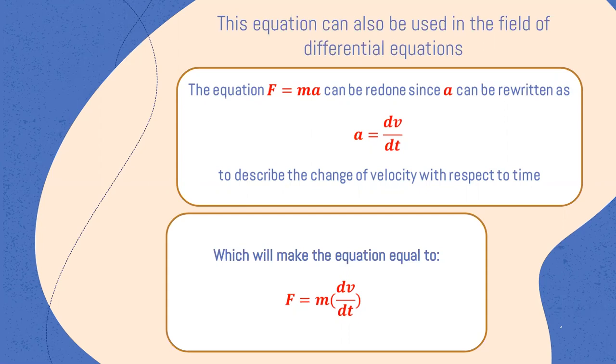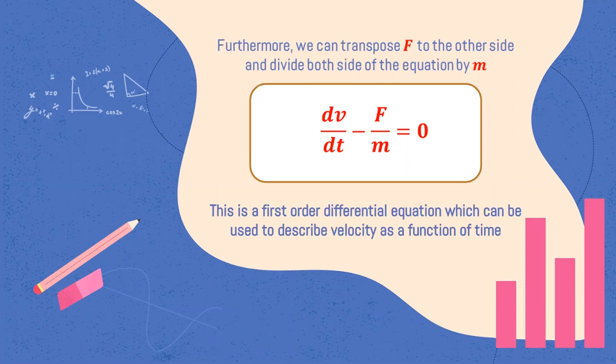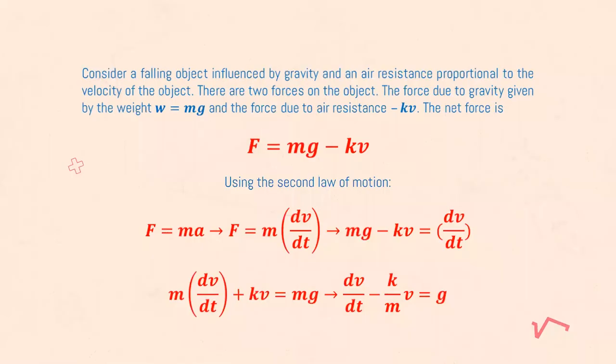Furthermore, we can transpose F to the other side and divide both sides of the equation by m, which gives us the differential equation dv over dt minus F over m equals zero. This is a first order differential equation which can be used to describe velocity as a function of time.